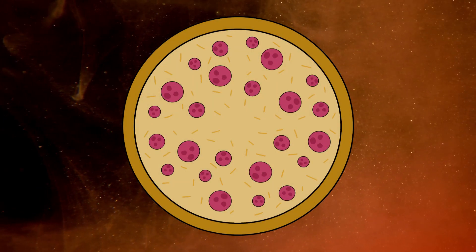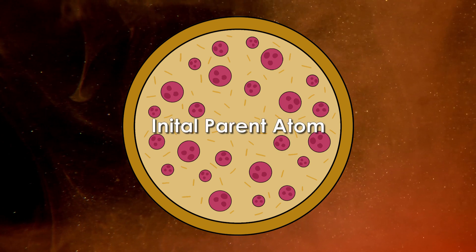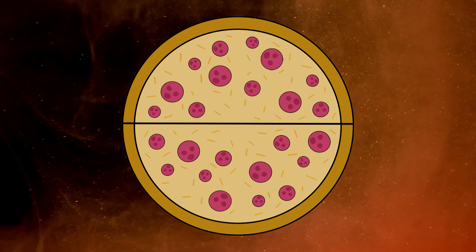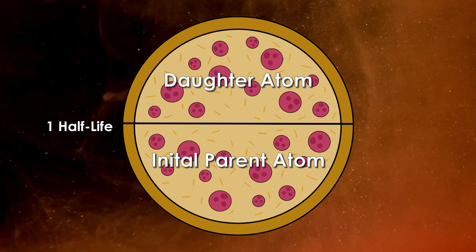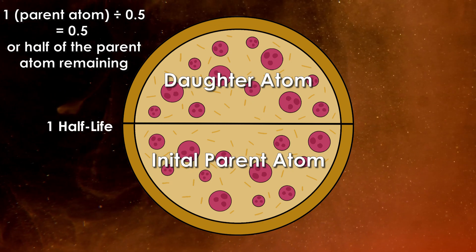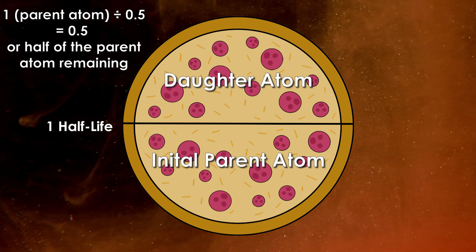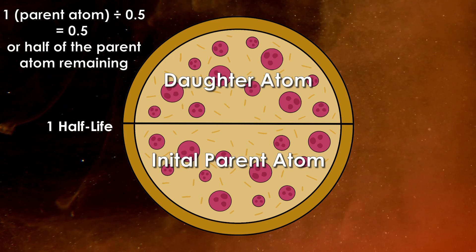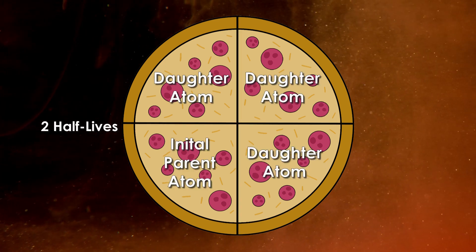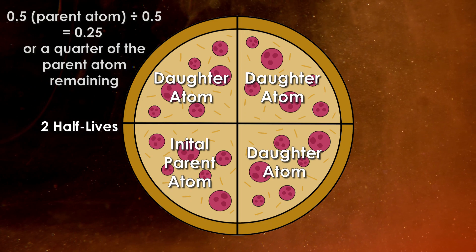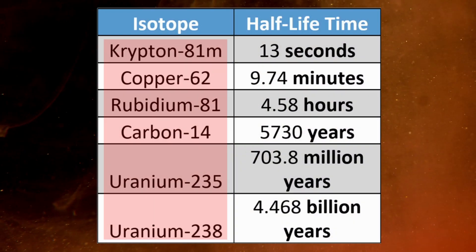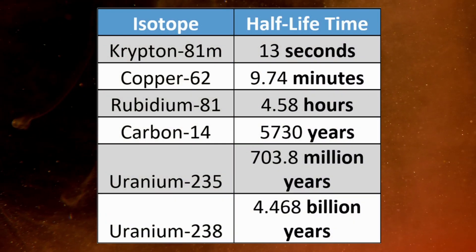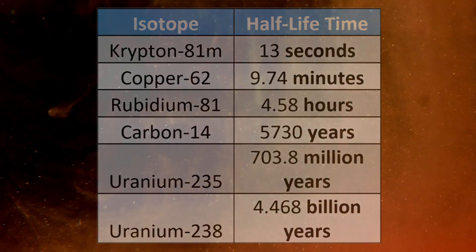An easy way to think about the decay rate is to imagine a pizza. A whole pizza represents the initial parent atom. In one minute you cut it in half — this means one half-life of the element has passed, where half-life means the amount of time it takes for half of the parent atom to decay into daughter atoms. Another minute passes and you cut the pizza in half again; now you have four quarters. Based on how many daughter atoms there are, it tells us the age of the object. Be aware, different elements decay at different rates, so instead of one minute, some elements might take ten minutes to be cut in half.